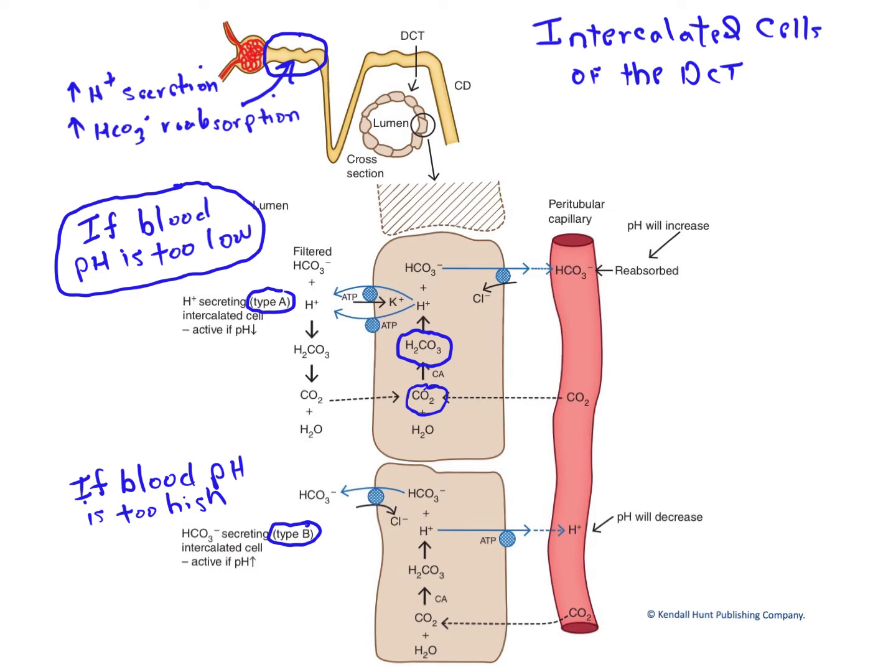As an acid, H2CO3 dissociates, releasing protons and bicarbonate. The protons are pumped across the apical membrane into the tubular fluid by the proton pump, an ATP-dependent mechanism.